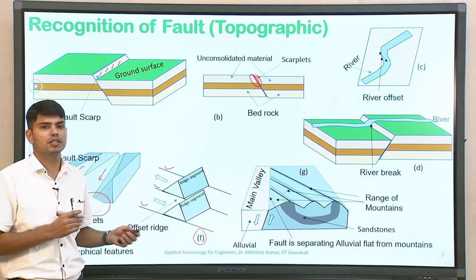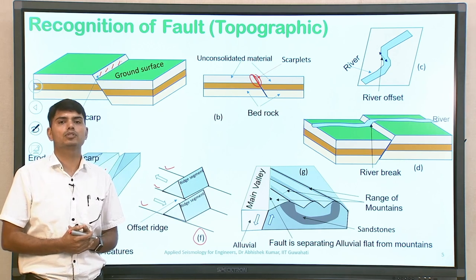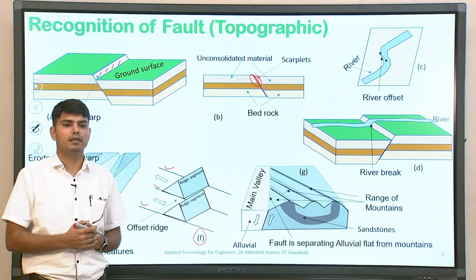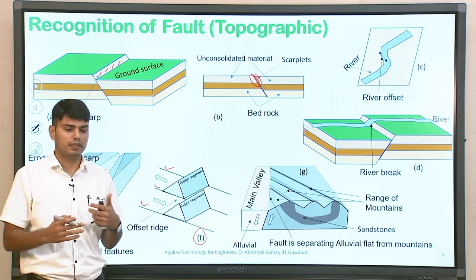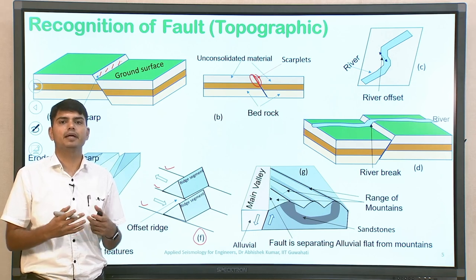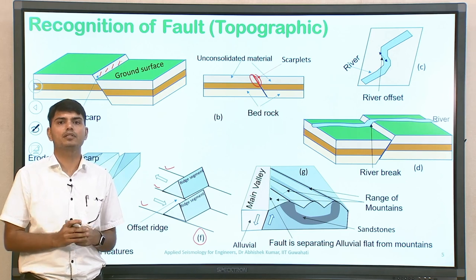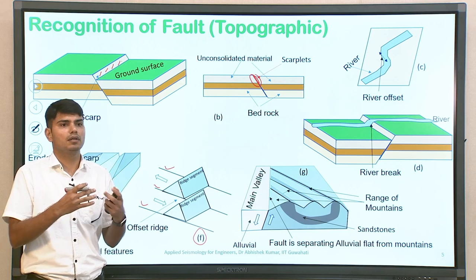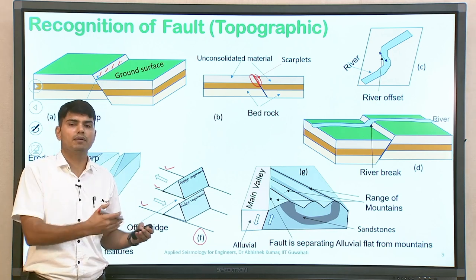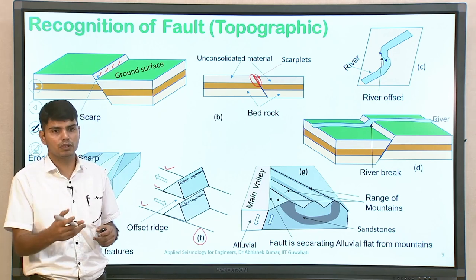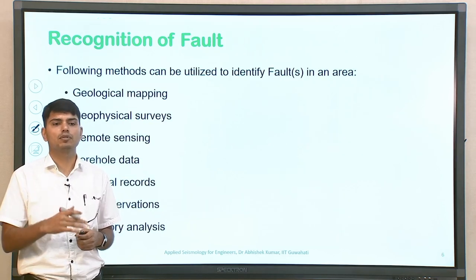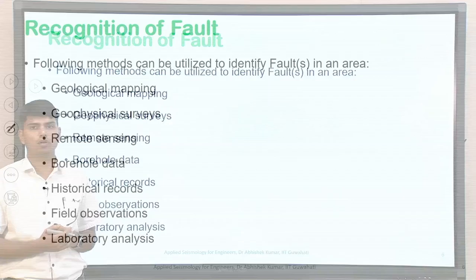All these topographical features, when studied in a particular region, help in understanding where possible faults are located. The identification of faults in a particular region is a continuous process — it is very difficult to say all faults in a particular region have been identified. There will always be some faults whose dominating mechanism has not been understood, or faults that have developed very recently. This is a continuous process, and so is the identification of faults based on topographical features.